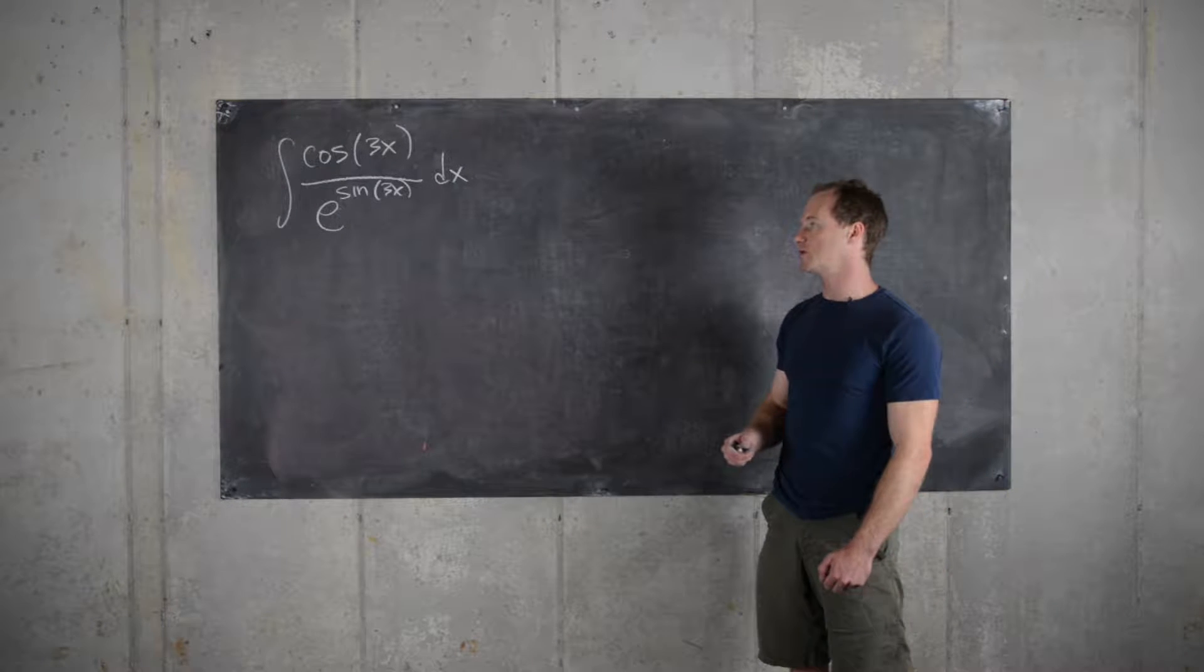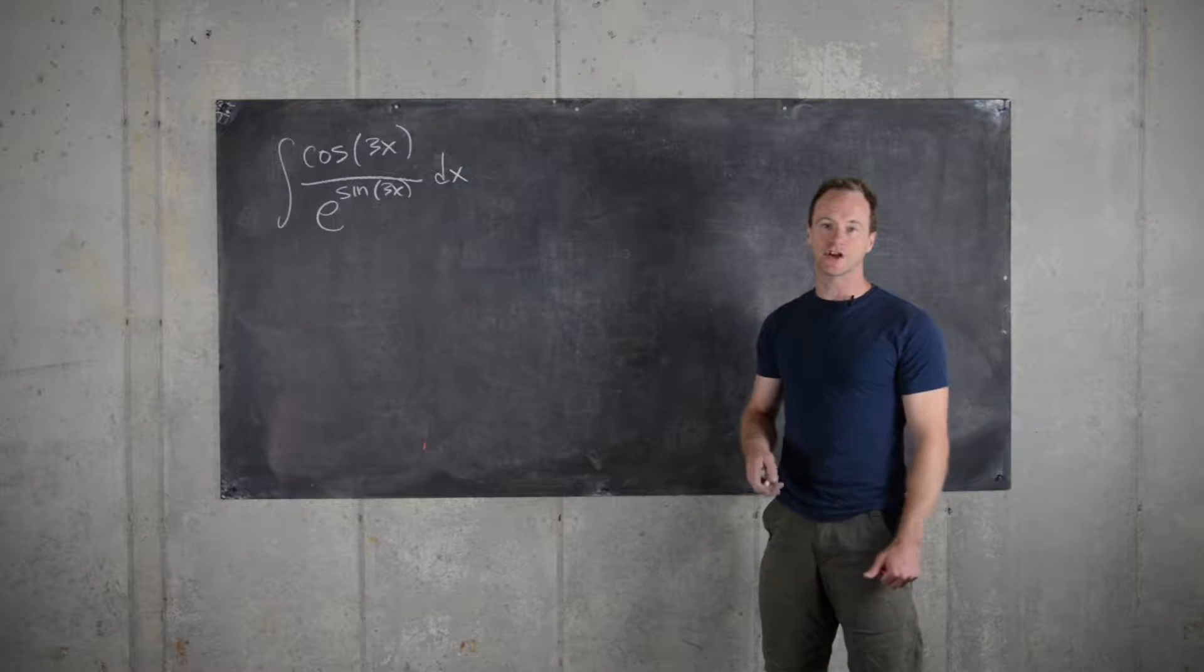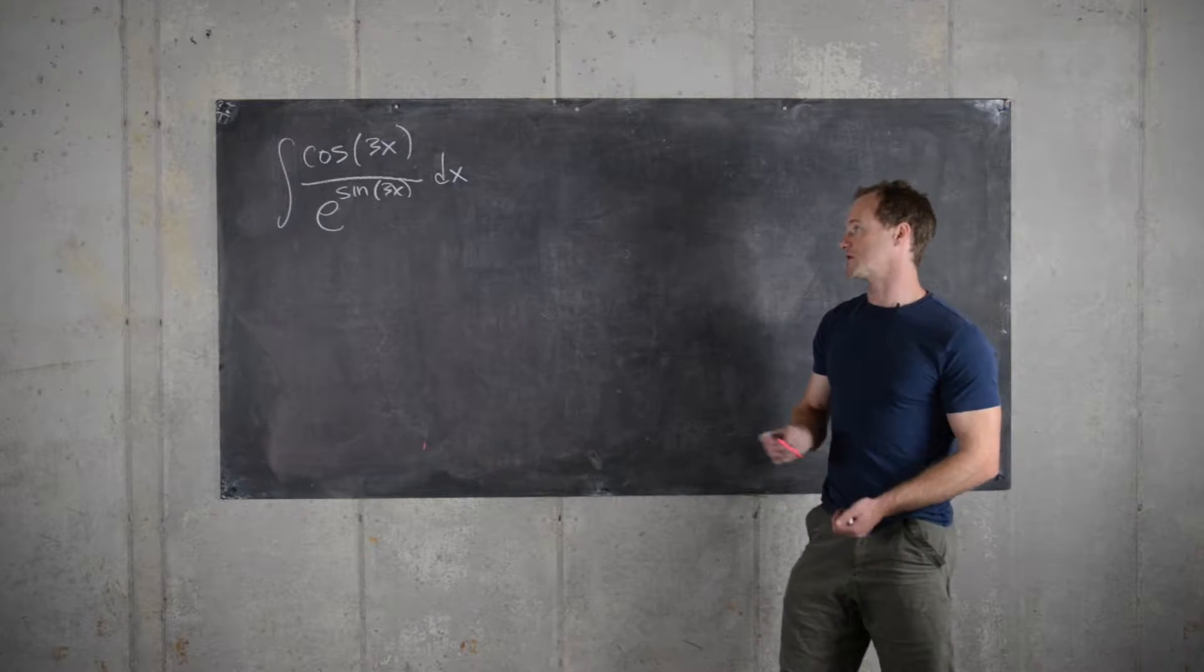So the most deeply composed function here is sine of 3x. That's inside this exponential function and in the denominator. So let's see what we get if we let u equal sine of 3x.